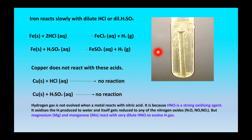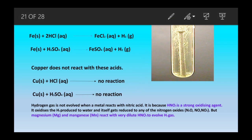Therefore, dilute HNO₃ does not produce hydrogen gas. Only two metals — magnesium and manganese — react with dilute HNO₃ to produce H₂ gas, while other metals do not produce hydrogen gas when reacting with nitric acid.